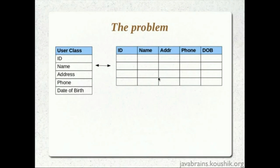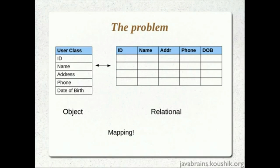There have been solutions over the years trying to address this elegantly, and the ideal solution maps objects with the relational database — hence the name Object Relational Mapping (ORM). This is the primary reason Hibernate came into existence: to help developers bridge the gap between objects and relational databases. In the next tutorial we'll look at how to write a simple Hibernate application that uses this framework to save a user class into the database.